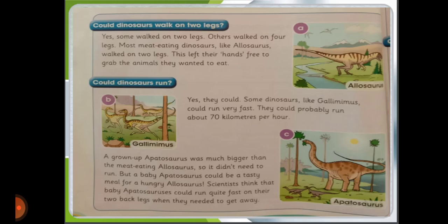Could dinosaurs run? Yes, they could. Sometimes dinosaurs, like Gallimimimus, could run very fast — probably about 70 kilometers per hour. A grown-up Apatosaurus was much bigger than the meat-eating Allosaurus, so it didn't need to run. But a baby Apatosaurus could be a tasty meal for a hungry Allosaurus. Scientists think baby Apatosaurus could run quite fast on their two back legs when they needed to get away.